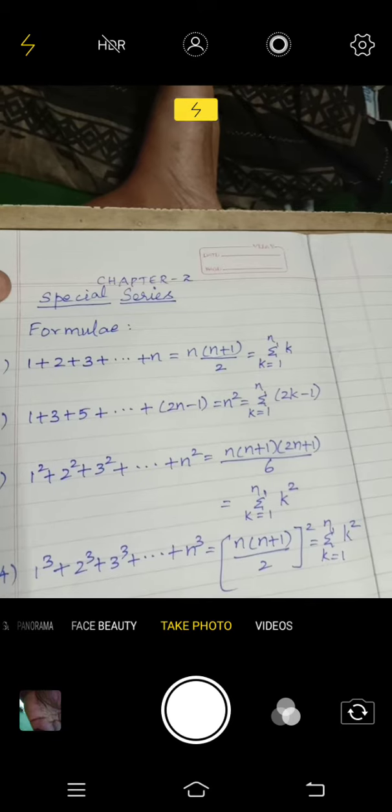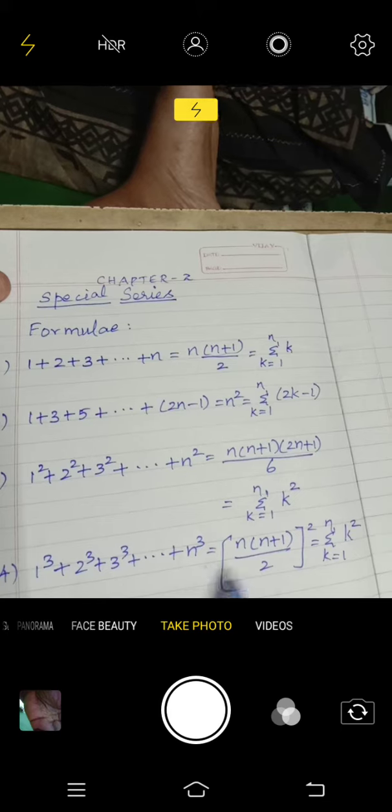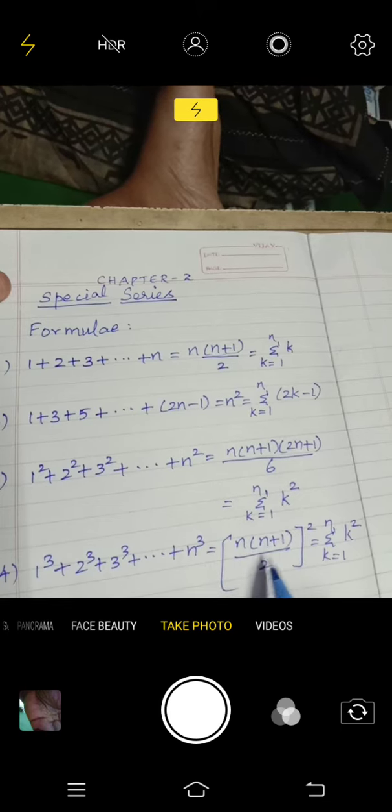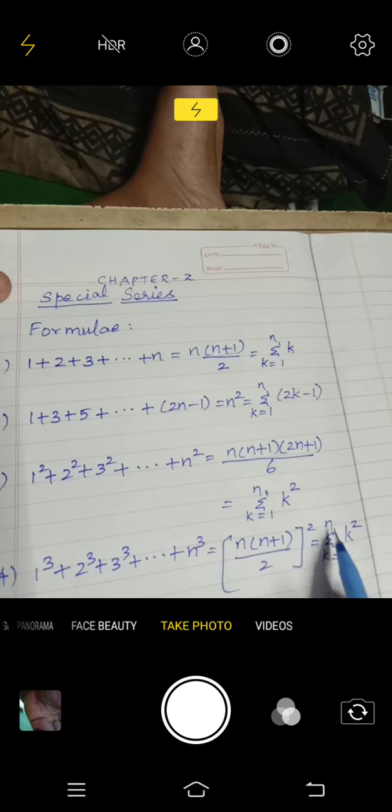Next is sum of cubes: 1 cube plus 2 cube plus 3 cube plus etc. n cube. This is equal to n into n plus 1 by 2, whole square. This can be represented as summation k equal to 1 to n, k cube.